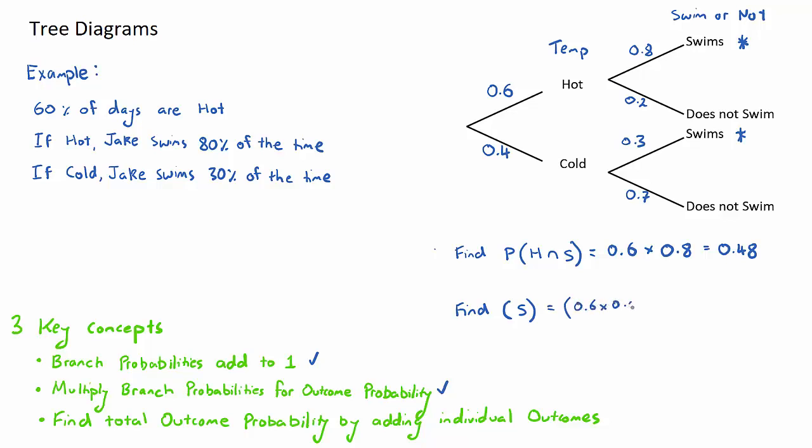The probability that he swims will be 0.6 multiplied by 0.8, and then we just simply add the next one. I go down this branch then up this branch, 0.4 multiplied by 0.3. This will be 0.48 plus 0.12, that will be 0.6. So the overall probability that Jake swims is actually going to be 60%.